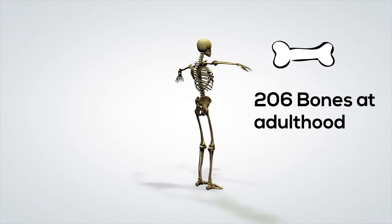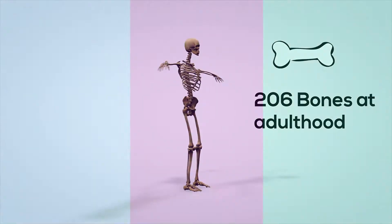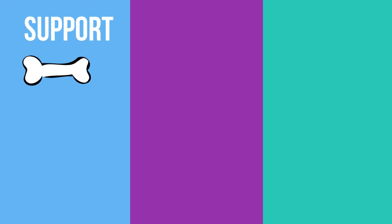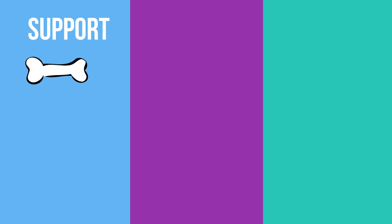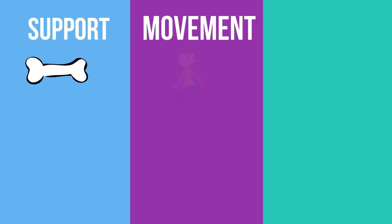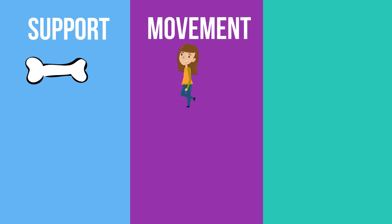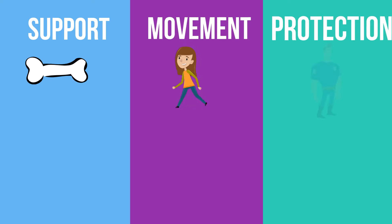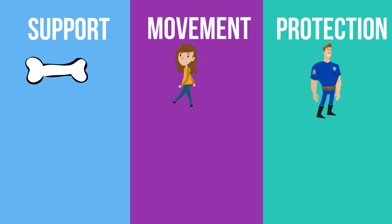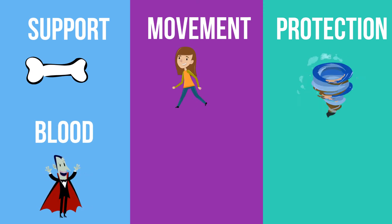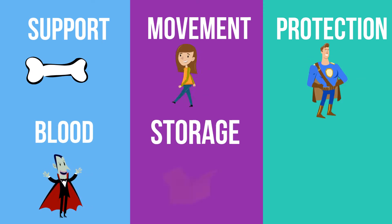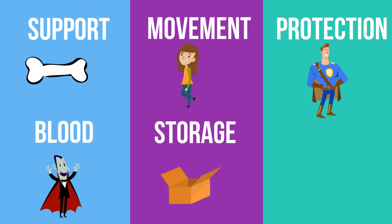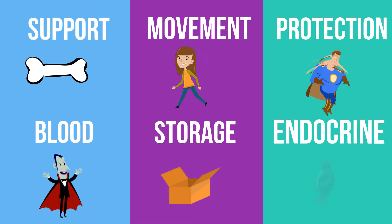The human skeleton performs six major functions: support, movement, protection, production of blood cells, storage of minerals, and endocrine regulation.